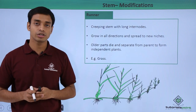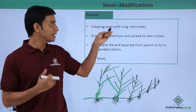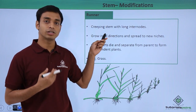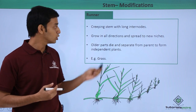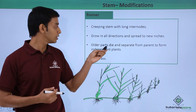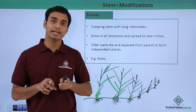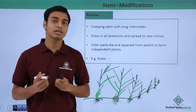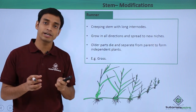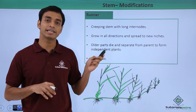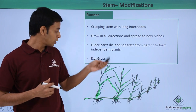The next modification is known as a runner. These are creeping stems that run along the surface of the soil with long internodes. They can creep along the ground and grow in all directions, spreading to new areas.